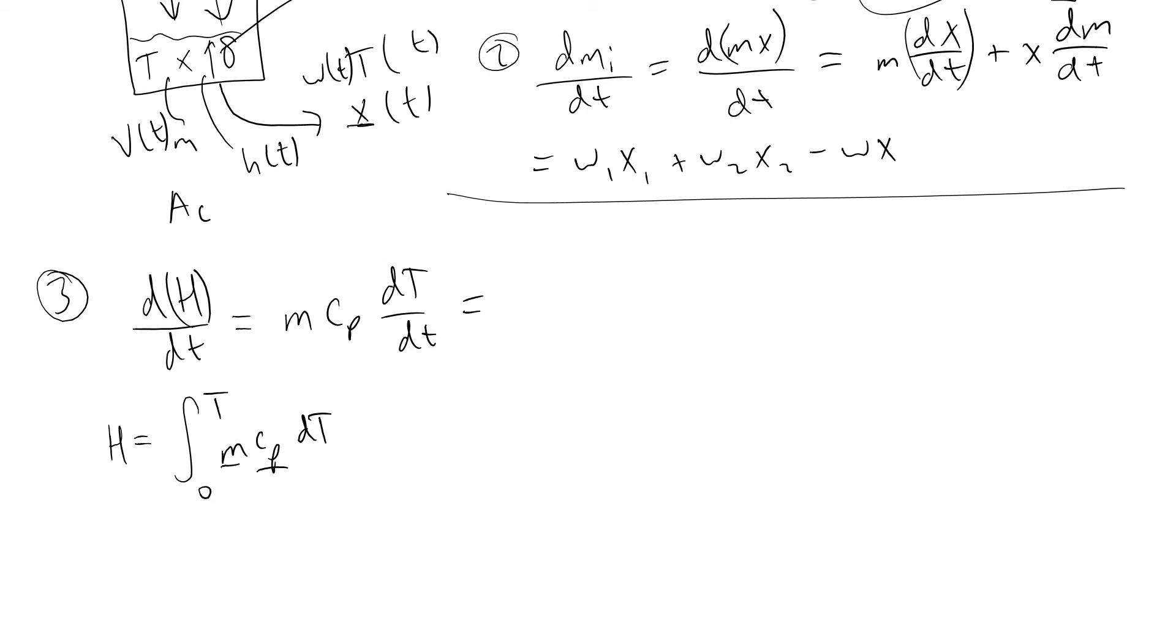Next we have the enthalpy coming in from stream 1, stream 2, and exiting. We'd have w1 times specific enthalpy 1, and specific enthalpy equals enthalpy divided by mass, which equals the integral from 0 to T of cp dT.